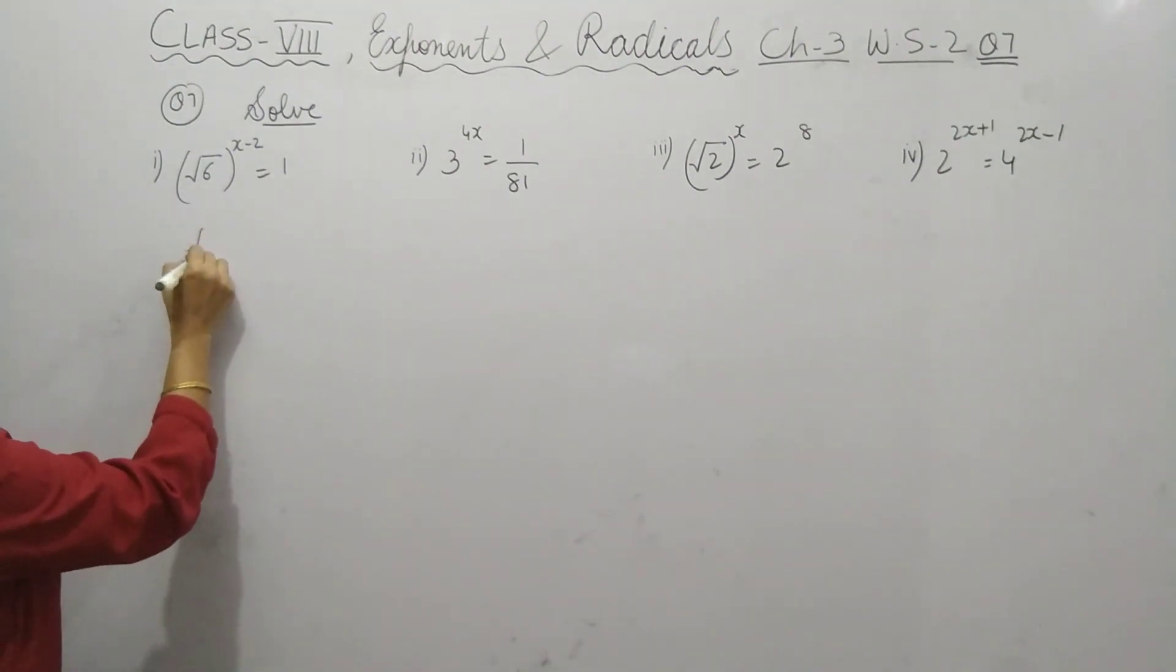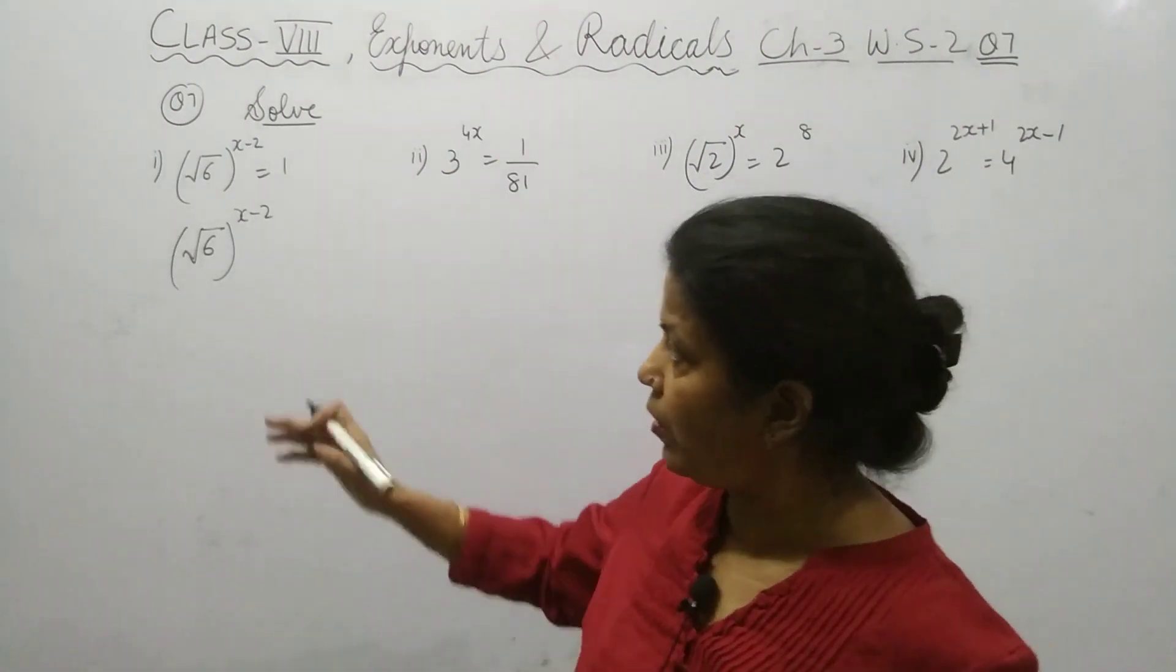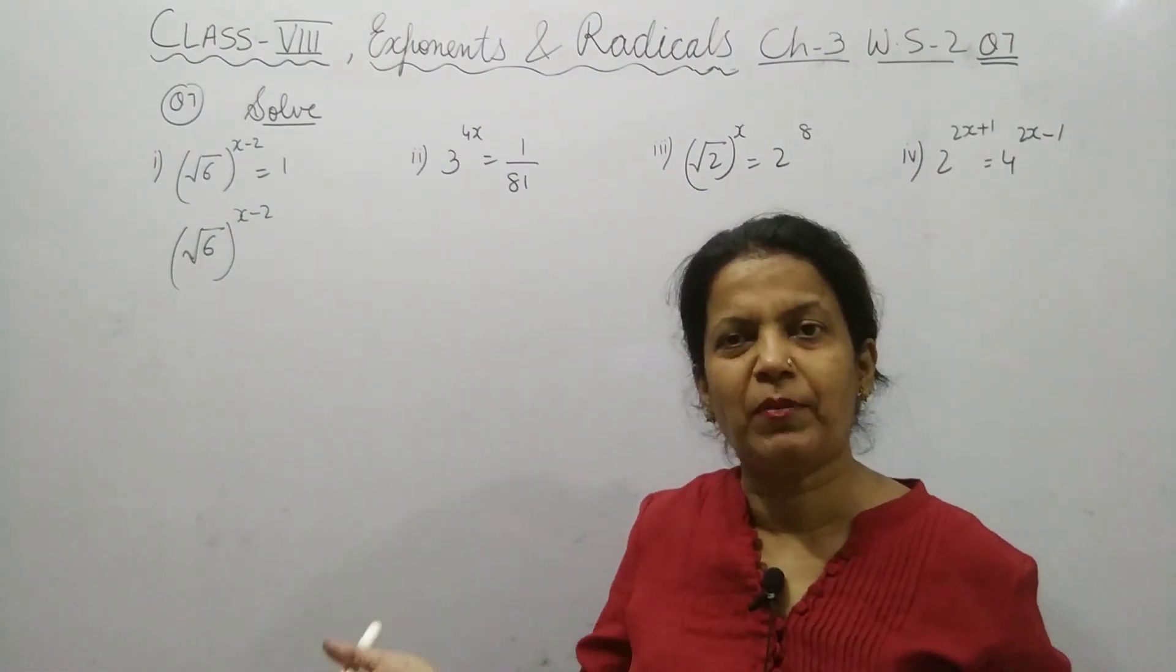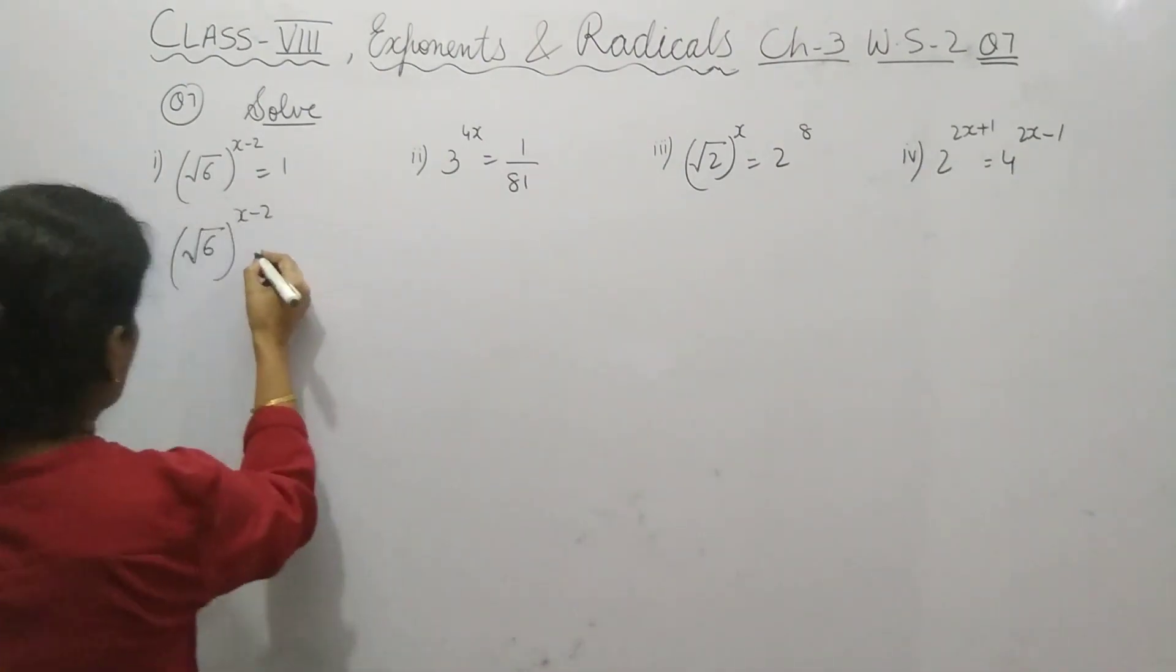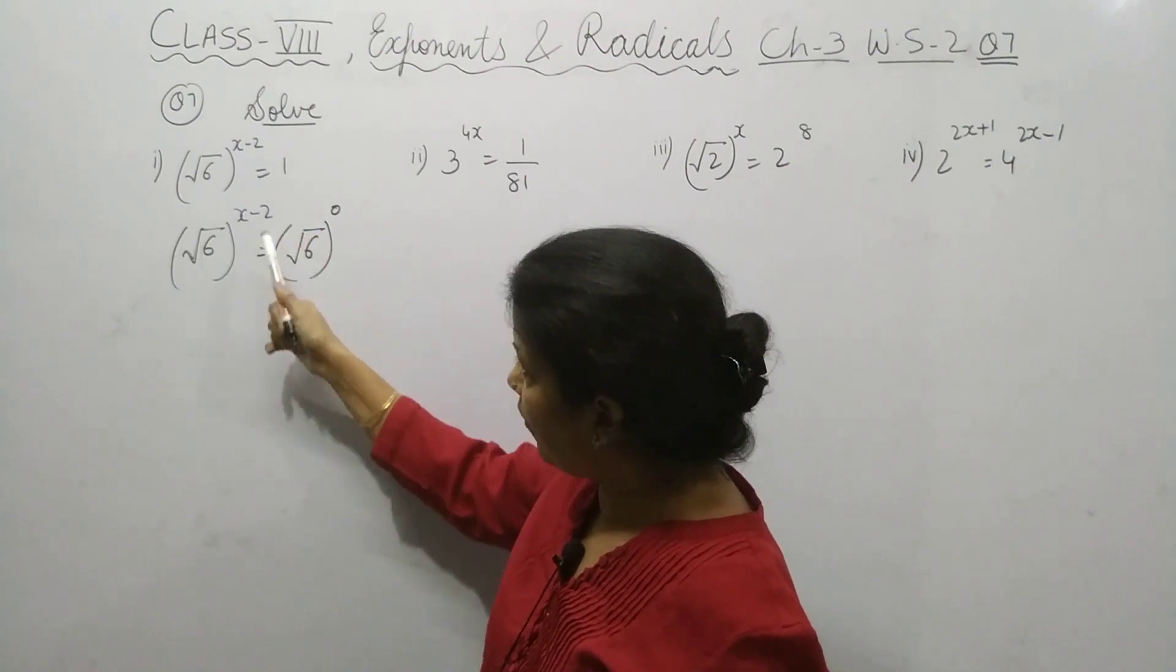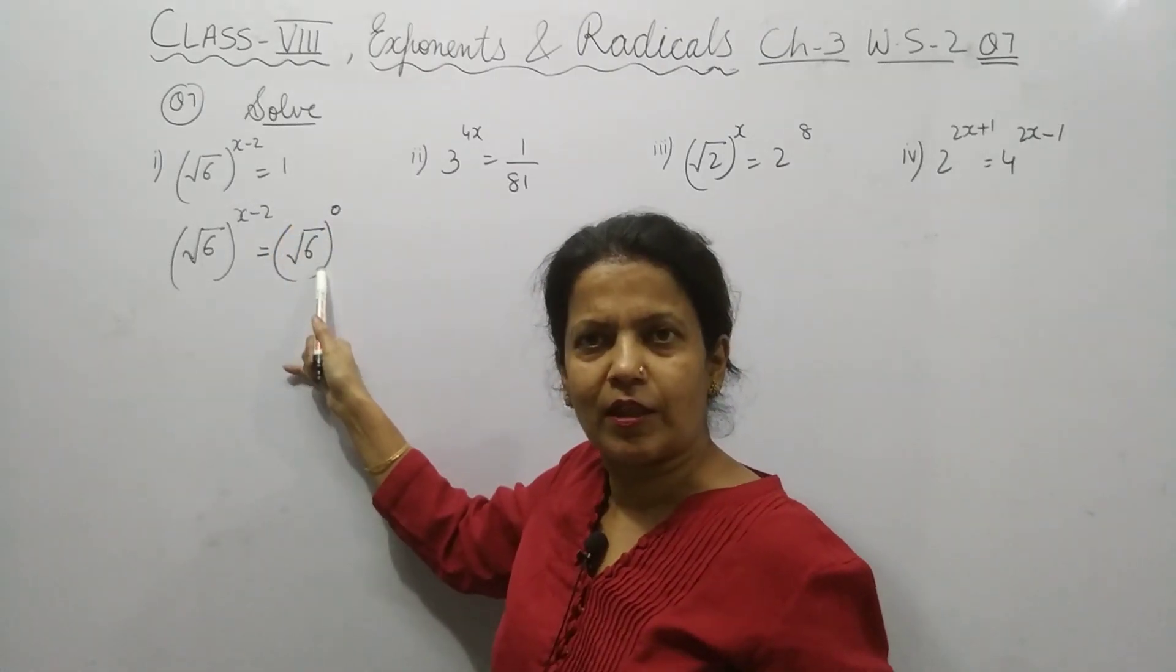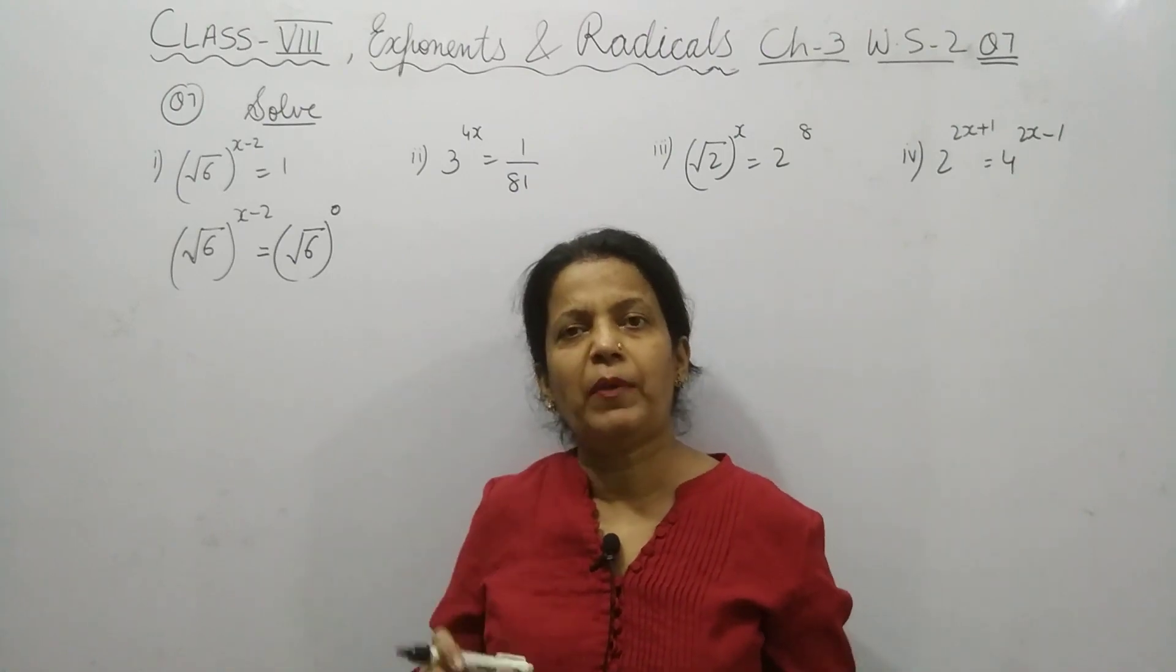To find the power, can we write 1 in some other form so that both the bases will become same? Instead of 1, it should be in the form of root 6, so that basis becomes same but the answer should remain as 1. Yes we can write it. Instead of 1, anything power 0 is always 1. So we will write it root 6 power 0. Why are we taking root 6? So that the bases will become same.